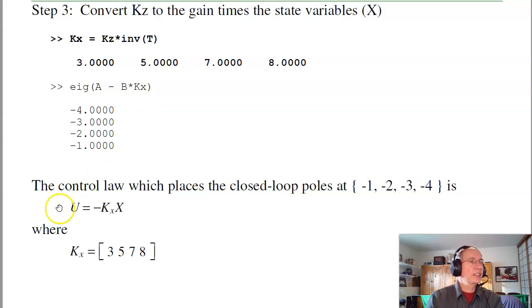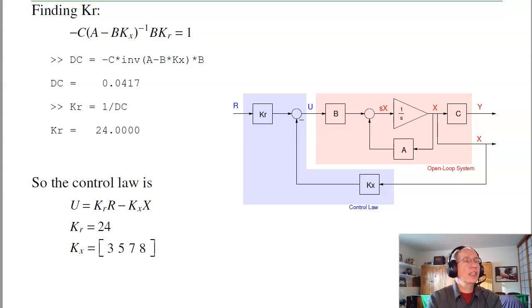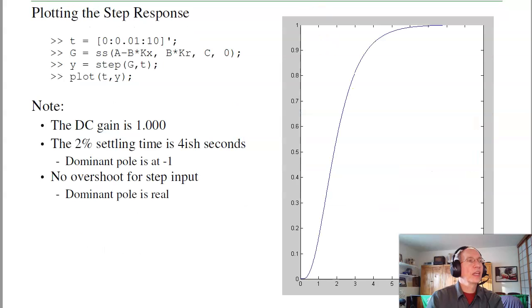The control law, then, is just U equals minus KX times X, where KX is 3, 5, 7, 8. Finally, find Kr to make the DC gain 1. If I assume Kr is 1 for lack of anything better for now, the DC gain without Kr is minus C, A minus BKX inverse times B. The DC gain is 0.04. I want the gain to be 1, so throw in a fudge factor Kr to make it 1. In this case, Kr is just 1 over that. Kr should be 24. So here's my feedback control law: Kr is 24, KX is 3, 5, 7, 8.